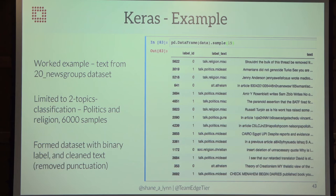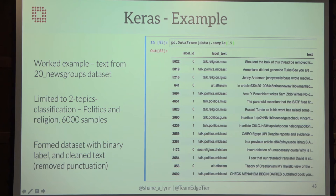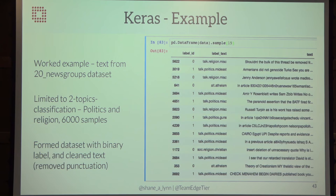I've built a toy example using the 20 newsgroups dataset — 20,000 samples of text from old news groups, basically posts. I reduced it to just two topics: politics and religion, labeled zero and one, giving a simple dataset of 6,000 samples split 50/50. The text is free form and a bit messy, but you can tell which are politics and which are religion. I removed punctuation for this example. We're going to build a neural network with three layers. The first is an embedding layer, whose job is to turn strings of text into strings of word vectors.